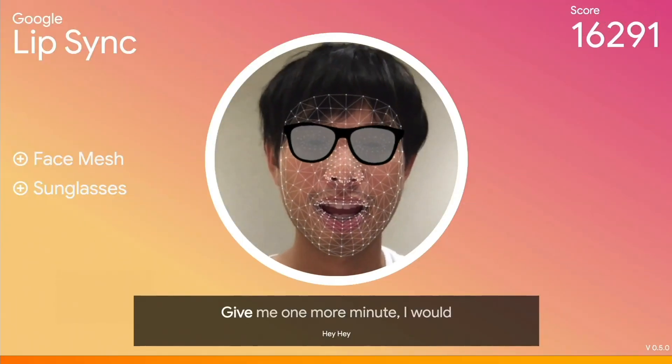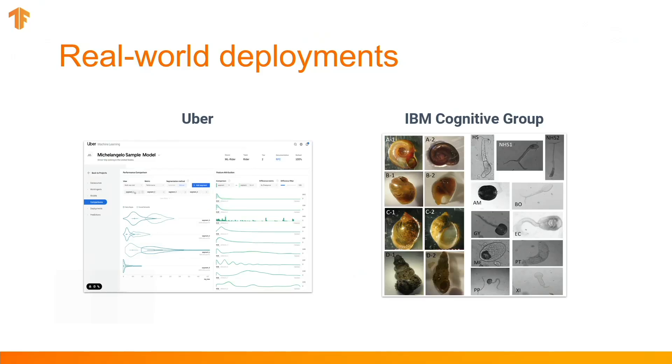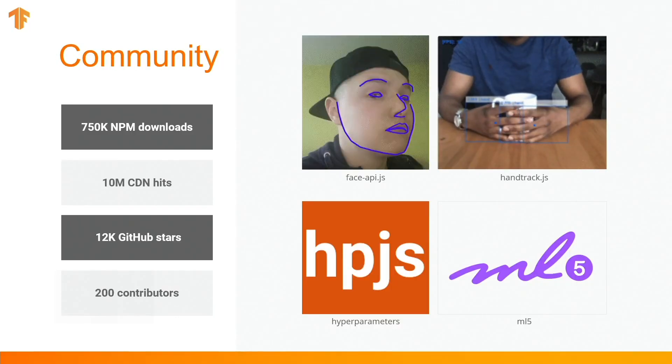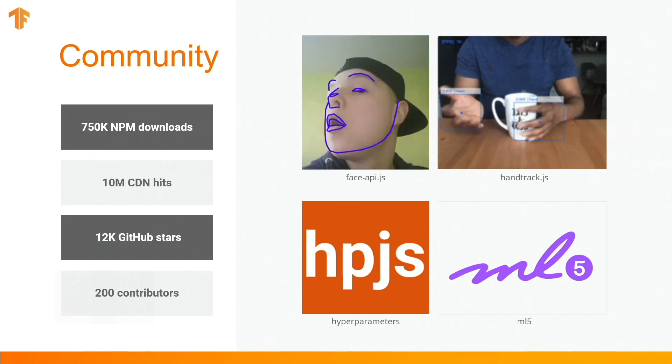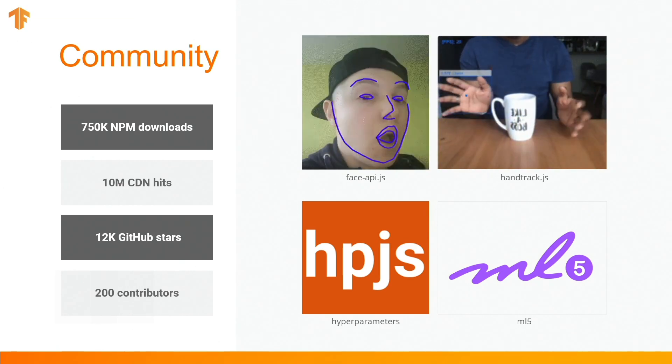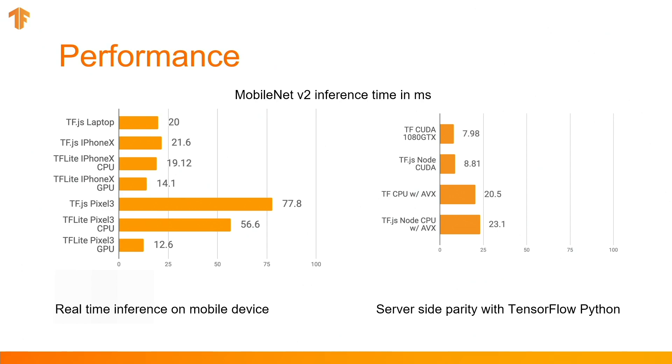What that means is after training a custom image classification model, you can export it for use in a web application with the click of one button. We have early customer testimonials showing impressive gains in their workflow by using this service. We are also excited about React Native integration — if you're a React Native developer building cross-platform native applications, you can now use TensorFlow.js directly from inside React Native and get the full power of WebGL acceleration.